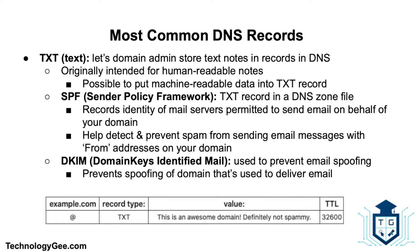Next is the TXT record, or text record, which lets a domain administrator store text notes in the DNS. The TXT record was originally intended for human-readable notes, but machine-readable data can also be stored. A common type of TXT record is the SPF, or Sender Policy Framework, which identifies which mail servers are permitted to send email on behalf of your domain and helps detect and prevent spammers from sending email messages with forged 'from' addresses on your domain.